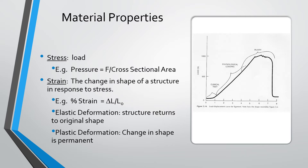Two types of strain are elastic deformation, which is when a structure is able to return to its original shape or height or length, and plastic deformation, which is when the change in shape of that structure is permanent.